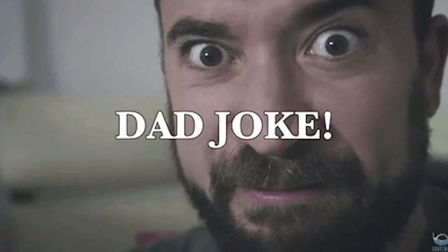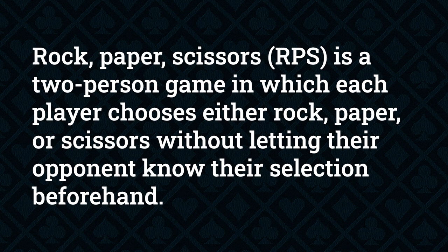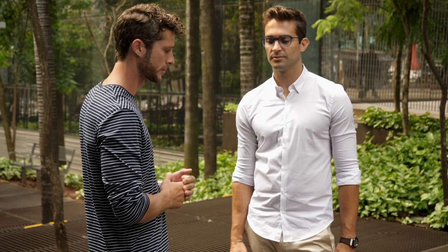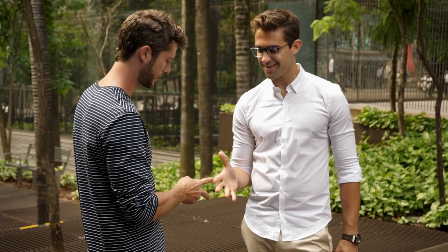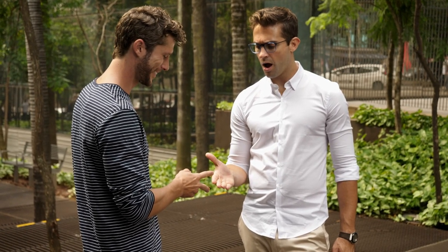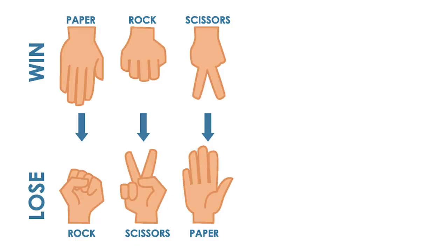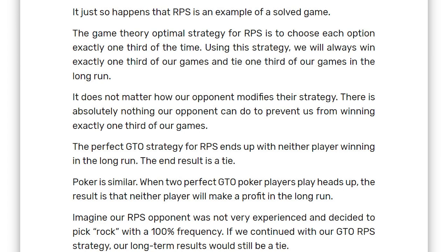Rock paper scissors, or RPS, is an extremely simple two-person game where each player chooses either rock, paper, or scissors without letting their opponent know their selection beforehand. Both players reveal their selection at the same time. The scoring is simple: rock beats scissors, scissors beats paper, paper beats rock, and if both players choose the same item, the result is a tie.